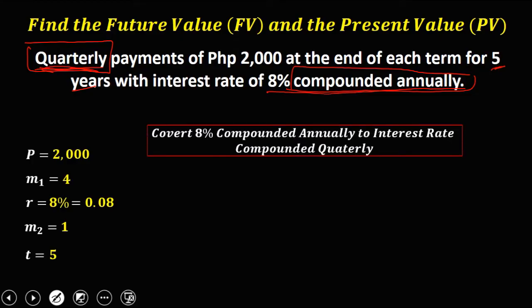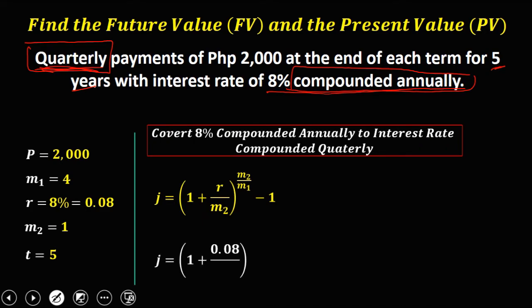To convert 8% compounded annually to an interest rate compounded quarterly, we use the conversion formula. Substituting the values: R is 0.08, over M2 which is 1, raised to the power of M2 over M1, that is 1 over 4, then minus 1.